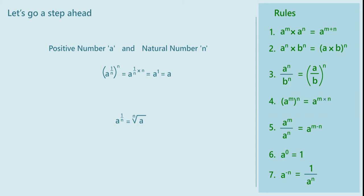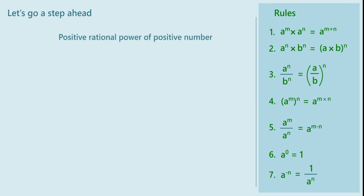Now we go a step further. We have already defined rational powers with numerator 1 of a positive number. Let us try to define any positive rational power of a positive number. Let us consider 8 raised to 2 upon 3. What meaning should we give to this? Recall the rule a raised to m, whole raised to n, equals a raised to m into n, and try to apply it. To which power should we raise 8 raised to 2 upon 3?